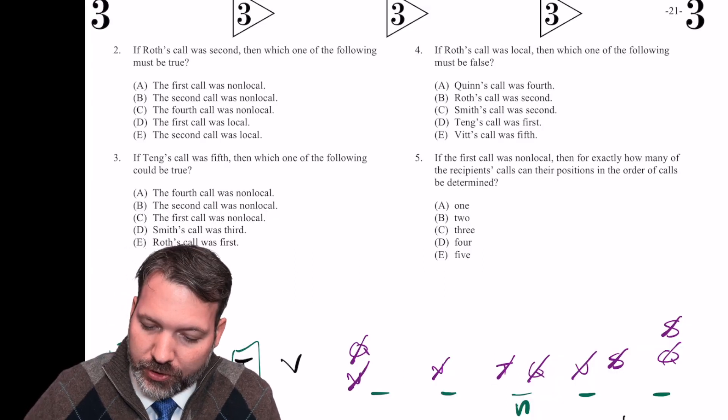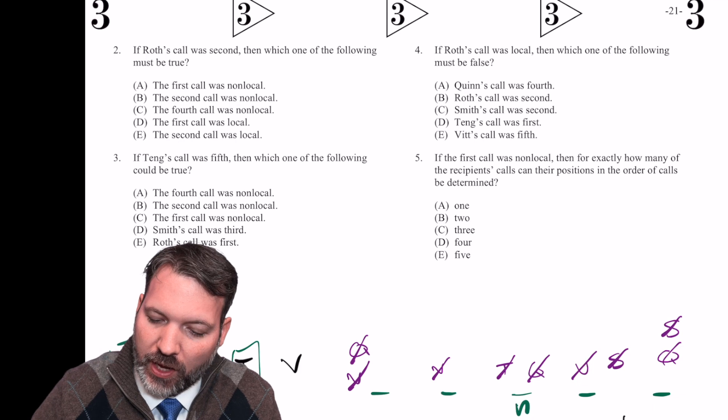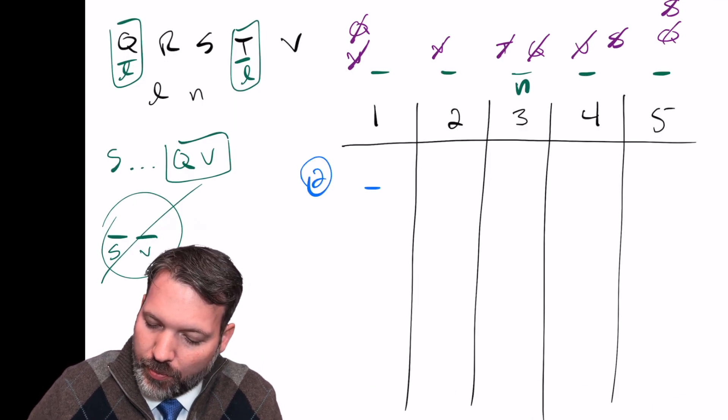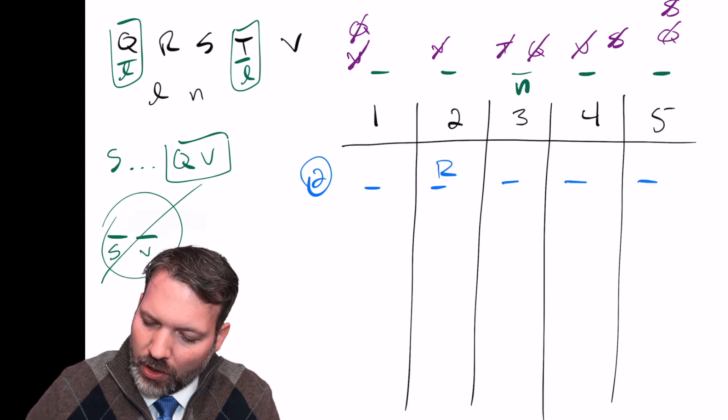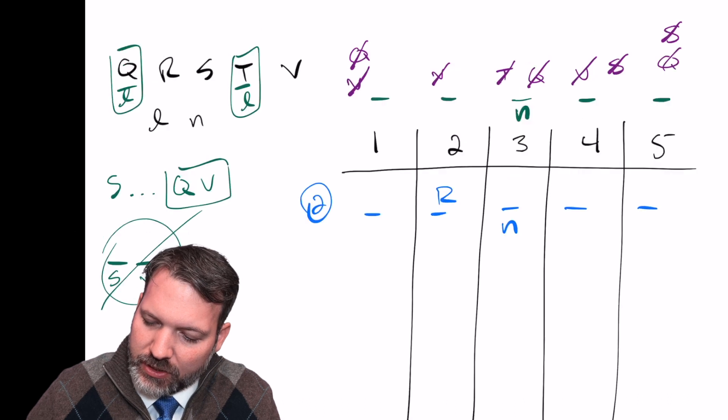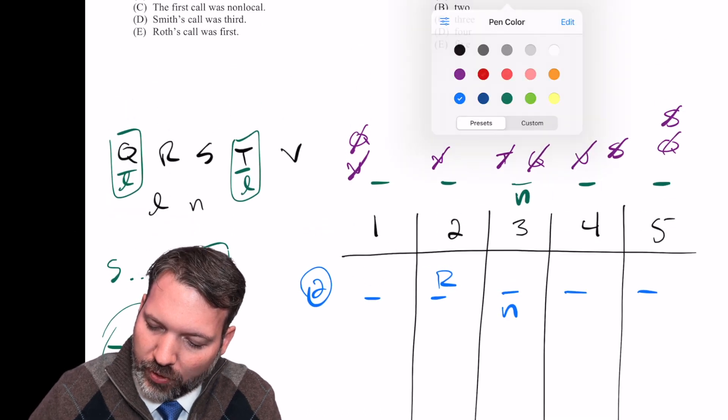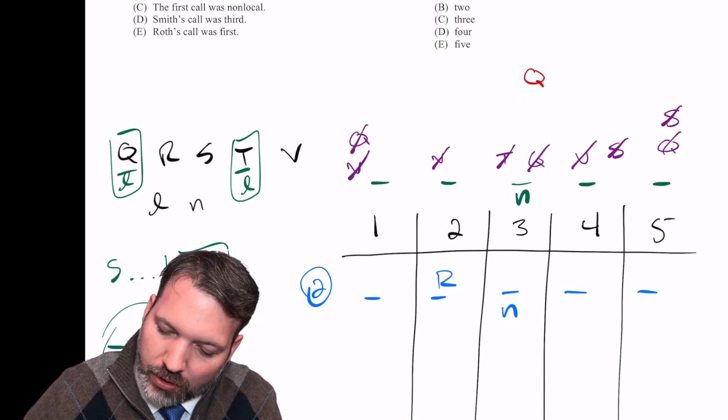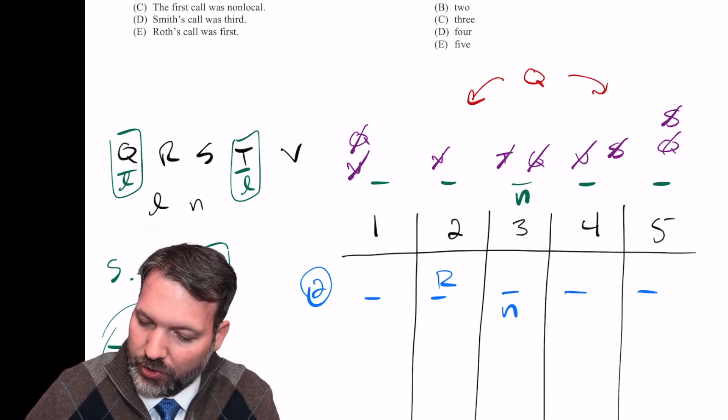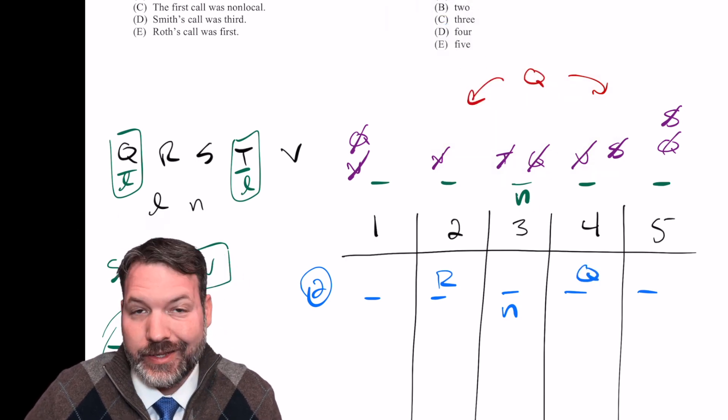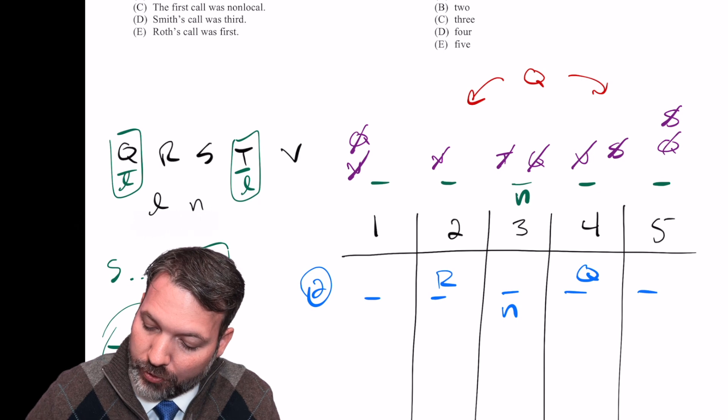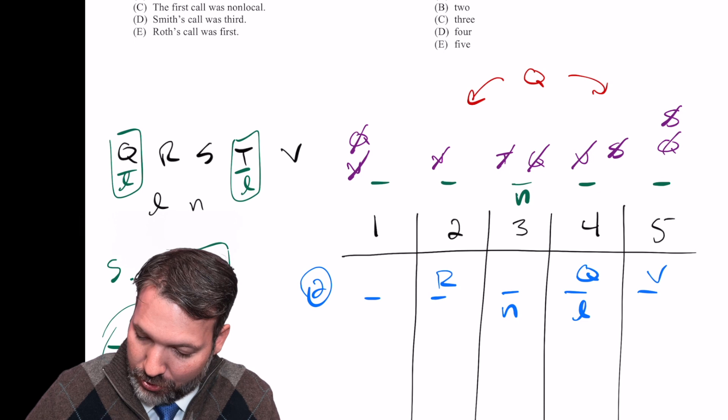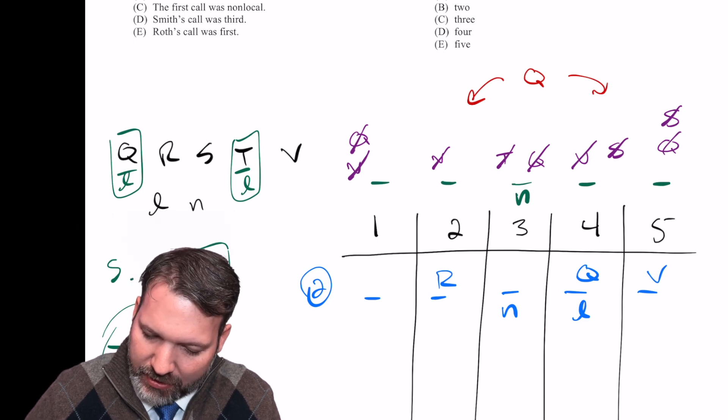Number two. If Roth's call was second, which one of the following must be true? So we're doing a must be true here. Let's go ahead and get that in our diagram. Roth's call is second. Of course, we know the third call is non-local. I didn't deduce this specifically before, but maybe I should. S can only ever go second. Wait, no, not S. Q. Q can only ever go second or fourth. So what that means in this particular scenario, since R is going second, is that Q is going to have to go fourth. Q, of course, we know is local. V always goes after Q. And so that's going to slot into the fifth spot there.